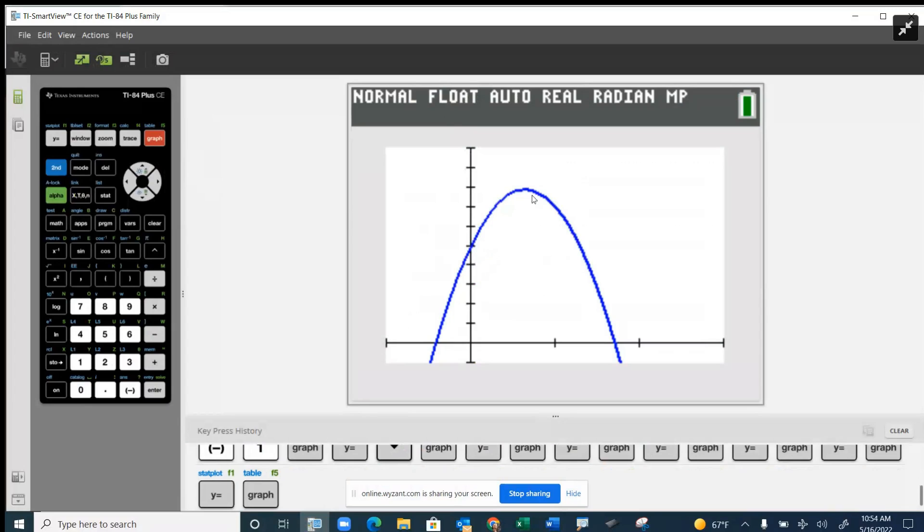And so, but you get this extra solution over here again because the calculator or because the function doesn't know that that doesn't make sense and that it only makes sense to talk about things that are in the future with positive x values.